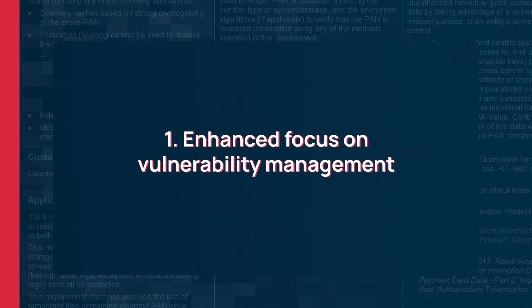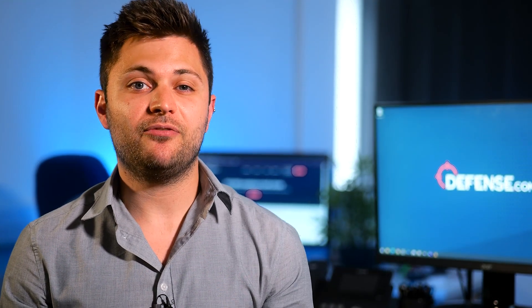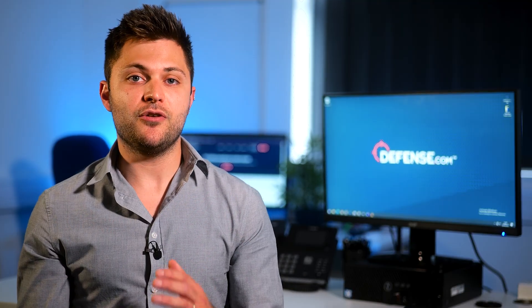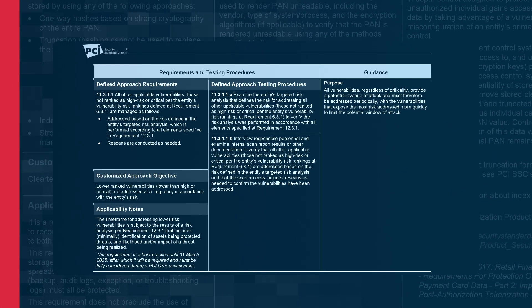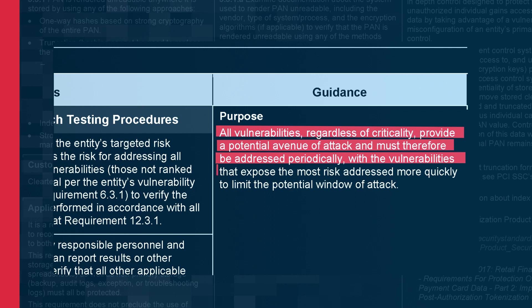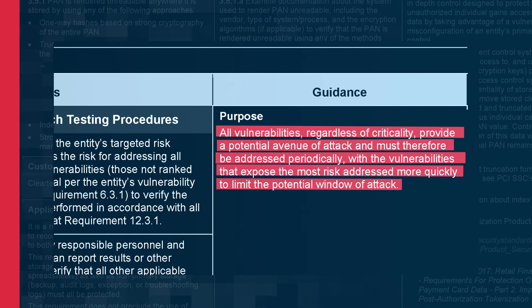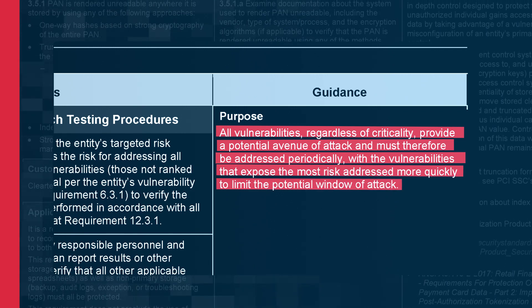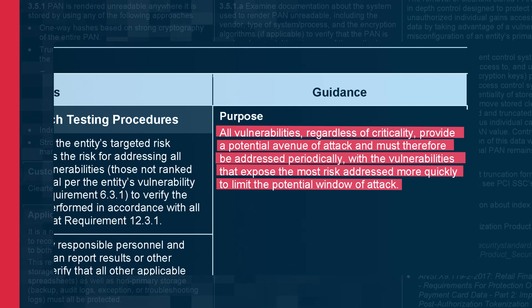The first change is an enhanced focus on vulnerability management. In version 3.2.1, it was necessary to fix critical and high-risk vulnerabilities. Version 4 takes that a step further — you now need to also fix medium, low, and informational risk vulnerabilities, addressing any vulnerability in your environment. This is important because modern attacks can chain multiple smaller vulnerabilities together to gain access to your system, so patching across your whole environment protects you from those kinds of attacks.